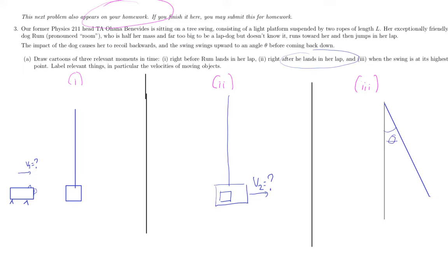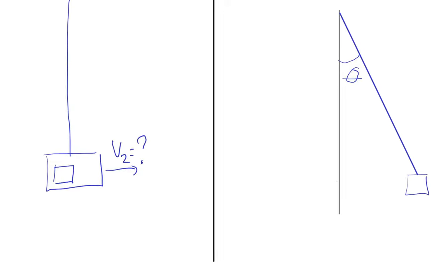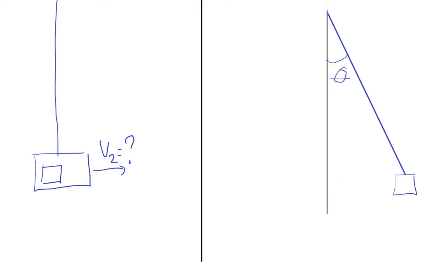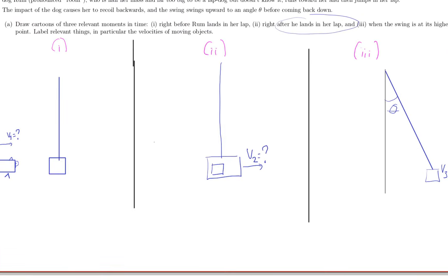Which I'll label as theta. And at that point, they're not moving because this is the highest swing of the entire thing. We'll label the length of the rope as L.